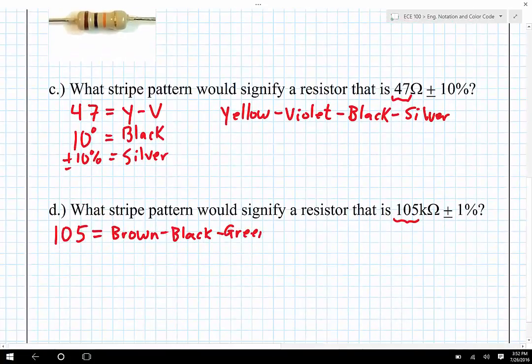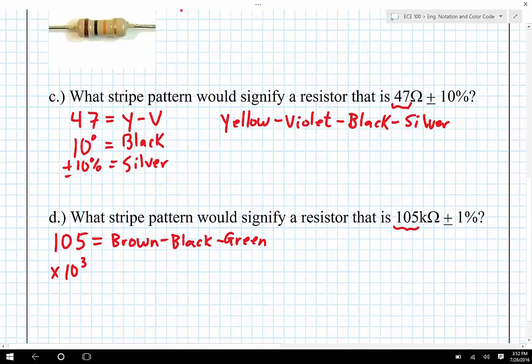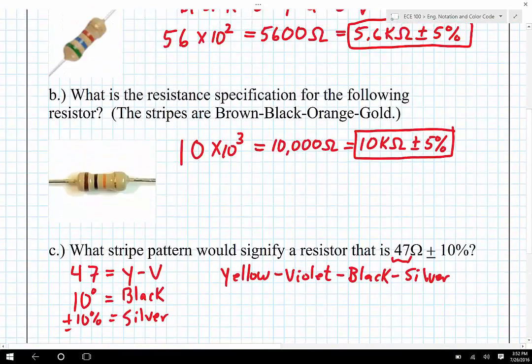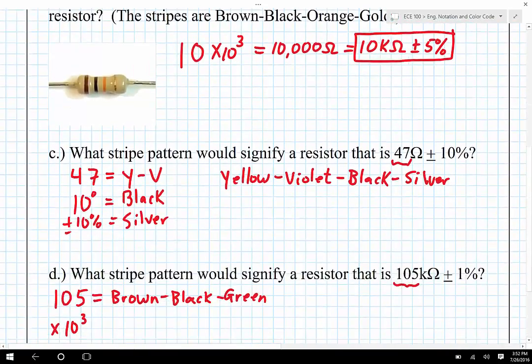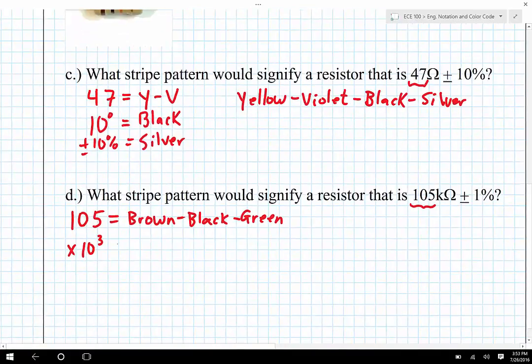And that is going to correspond to the 105, but it needs to be times 10 to the third power, because it's in kilo ohms. So 10 to the third power, that means that the exponent needs to be three, scrolling back up to the top, three corresponds to orange. And so therefore this is orange.